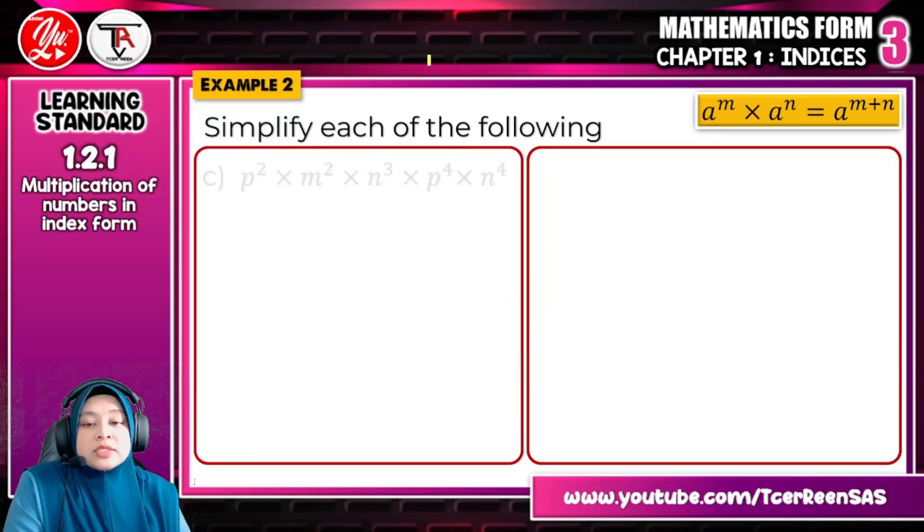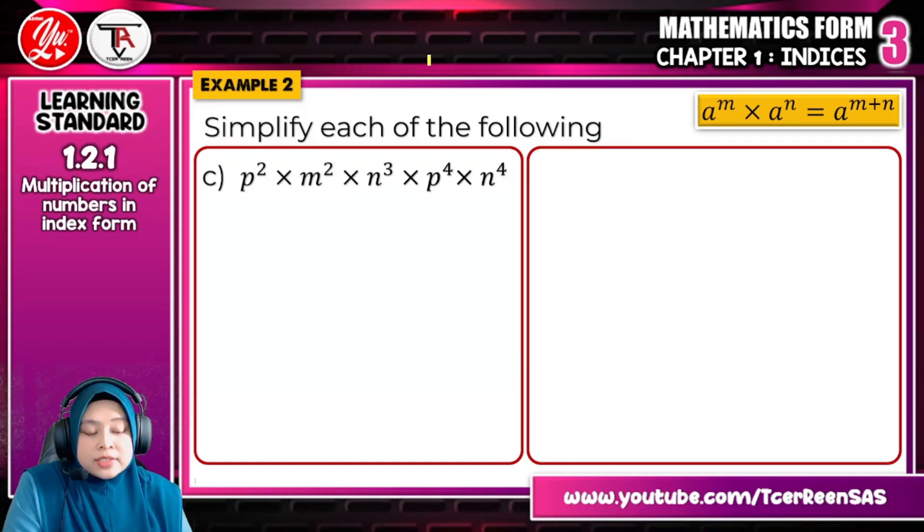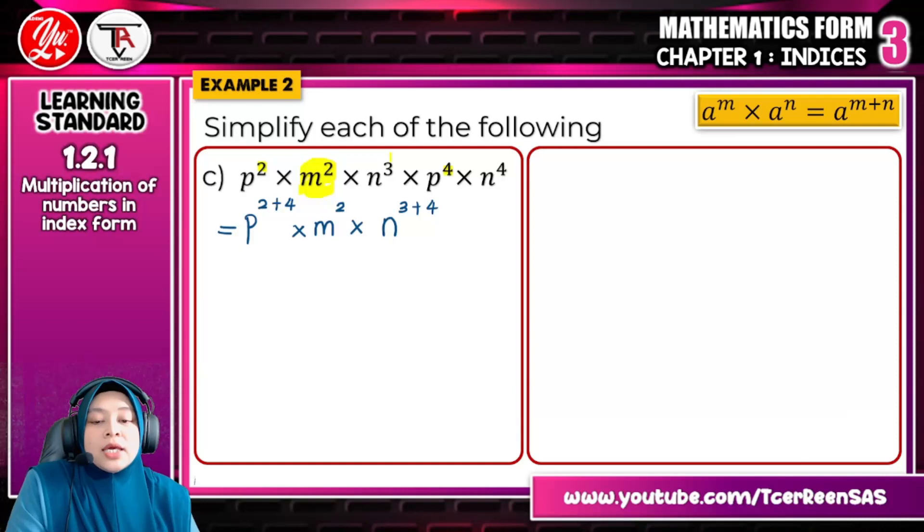We continue with third question for example 2. The same, I just play faster. Here you get 3 bases which is P, m and n. So P, you combine P and P, 2 plus 4. And then m, only 1 m here, no need to combine with any gang. And then n. So the final answer is like this.